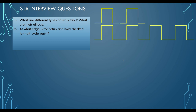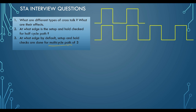The next most common interview question is: at what edge are setup and hold checks done by default for a multi-cycle path of three? The key point here is that when a candidate starts answering, the expectation is to first ask whether this multi-cycle path of three is specified for setup or for hold. By default the tool will not make an assumption — we have to specify. Generally it is specified for setup initially.